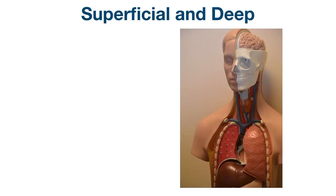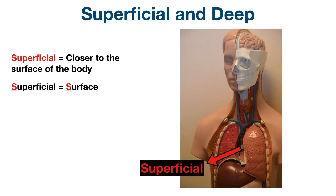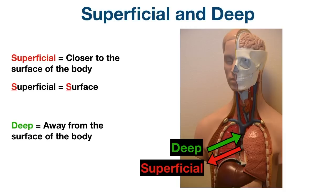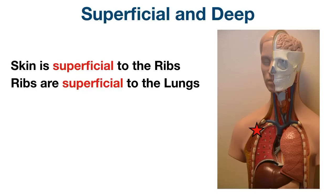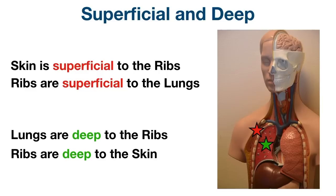The next pair of directional terms is superficial and deep. If we move closer to the surface of the body, then we're moving superficial — superficial is defined as closer to the surface. Superficial and surface both start with the letter S to help you remember this. If we move away from the surface of the body, then we're moving deep — deep is defined as away from the surface of the body, and the term is self-explanatory. For example, the skin is superficial to the ribs, and the ribs are superficial to the lungs. Or, the lungs are deep to the ribs, and the ribs are deep to the skin.